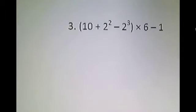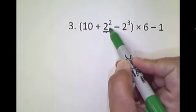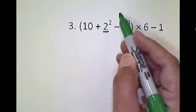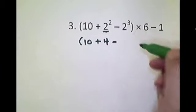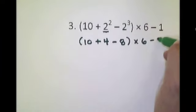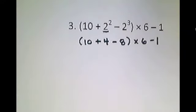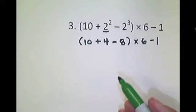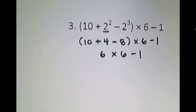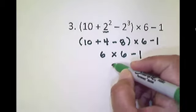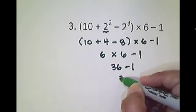Example number 3 in order of operations use evaluating expressions is the following, and notice we have pretty much everything in this one. So we are going to work at the parentheses first, and notice inside the parentheses we have exponents, so we need to evaluate those first. This is your base number, and we are taking 2 squared. That means 2 times 2, and that will give us 4. 2 to the third power means 2 times 2 times 2, which is 8. Inside the parentheses, we just have addition and subtraction, so I am going to go just left to right. 10 plus 4 is 14. 14 minus 8 is 6. After parentheses and exponents, we work on the multiplication. We have 6 times 6 is 36 minus 1, and the final answer would be 35.